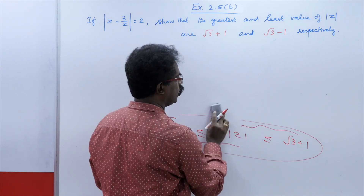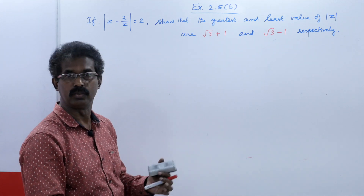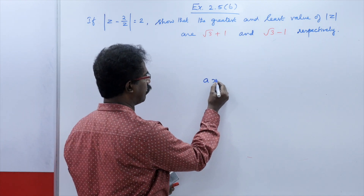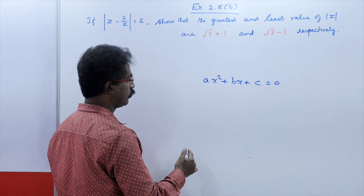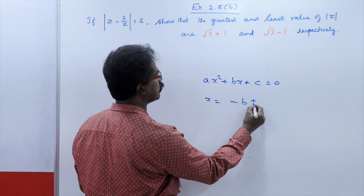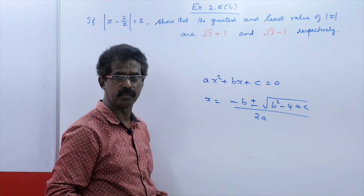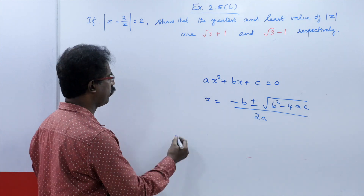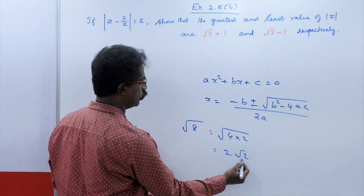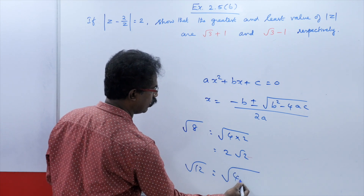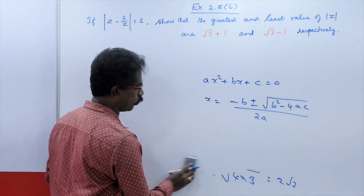But to do this you need some previous knowledge. You have to recollect what was studied earlier. First, the basic thing: suppose a quadratic equation ax squared plus bx plus c equals 0 is given. You can solve it using the formula x equals minus b plus or minus root of b squared minus 4ac, all divided by 2a. Also, root 8 can be simplified as root of 4 times 2, that is 2 root 2. If it is root 12, you write it as root of 4 times 3, and root 4 is 2, so it is 2 root 3.